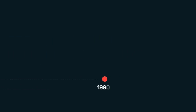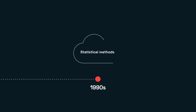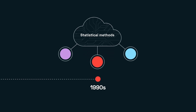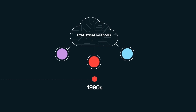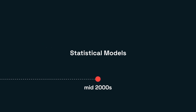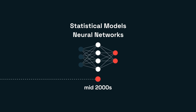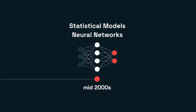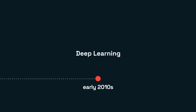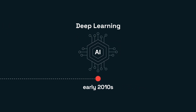Fast forward to the 1990s, when we saw the rise of statistical methods for machine translation that focused on learning from data rather than relying only on linguistic rules. And by the mid-2000s, several methods, including statistical models and early neural network approaches, were being used to power language models. But it wasn't until the late 2000s and early 2010s, with the advent of deep learning techniques and computational power improvements, that neural networks truly began to take center stage in language processing.